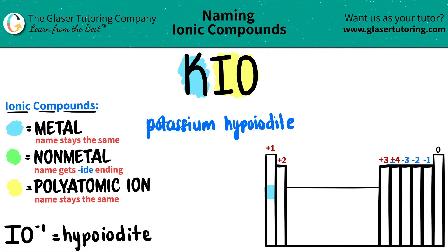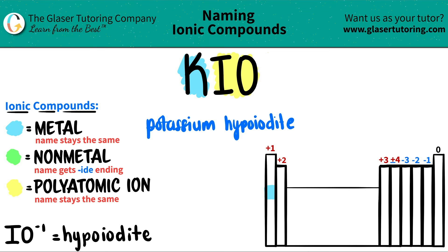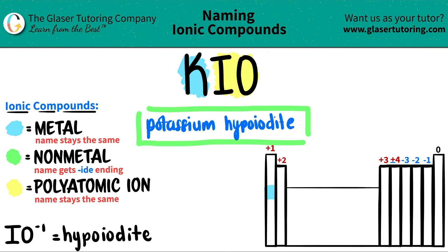Since this is an ionic compound, just make sure: do we need a Roman numeral or not? Since potassium is not in your transitional block — it's not part of the transition metals — you don't need a Roman numeral. So we are done. KIO is potassium hypoiodite. Easy as that — you just got to memorize the polyatomics.